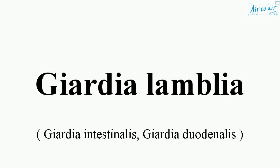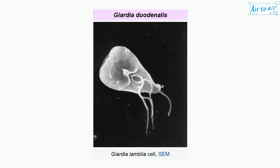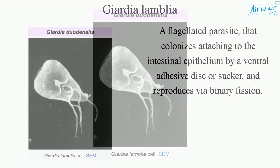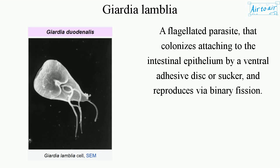Giardia lamblia: a flagellated parasite that colonizes by attaching to the intestinal epithelium by a ventral adhesive disc or sucker, and reproduces via binary fission.